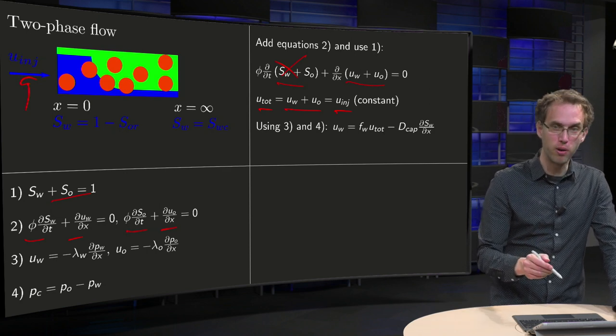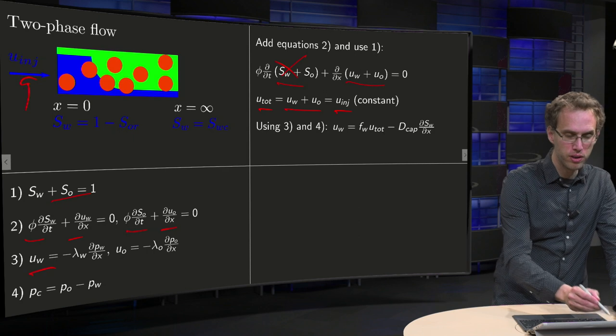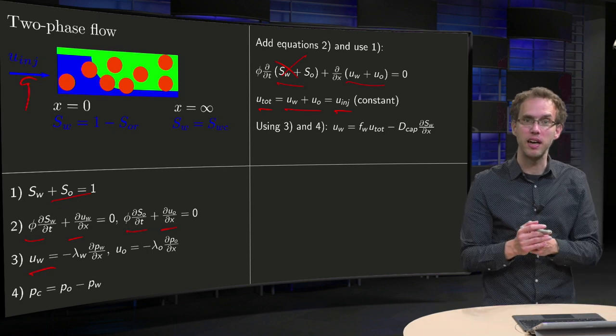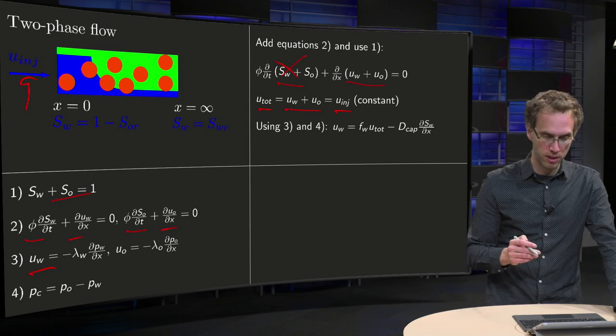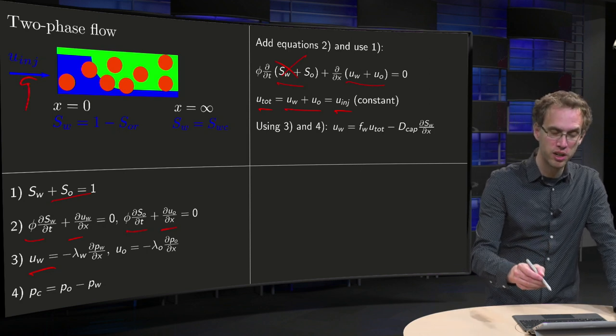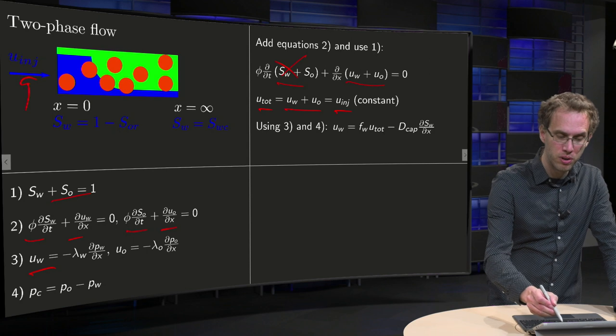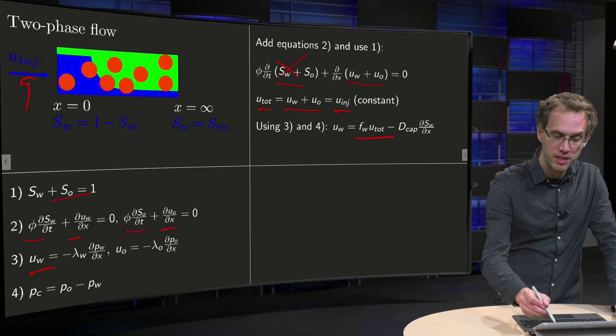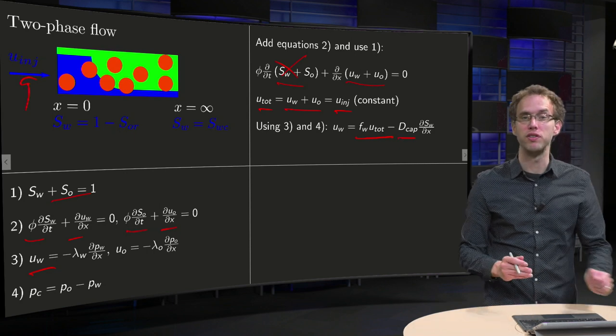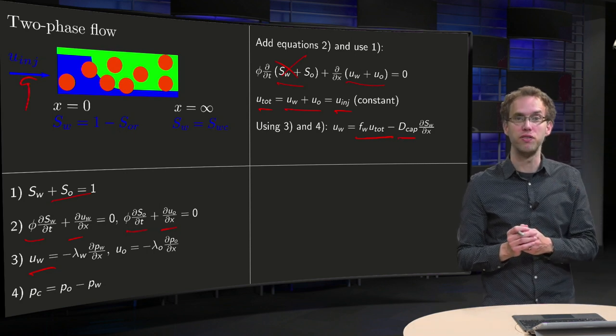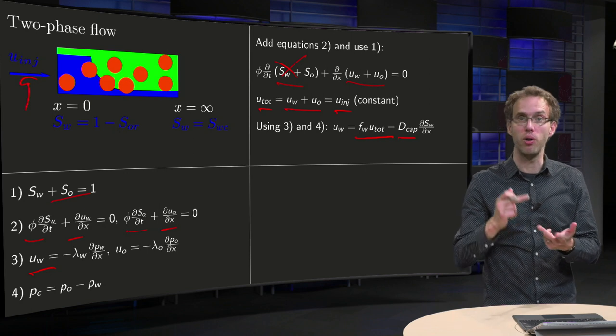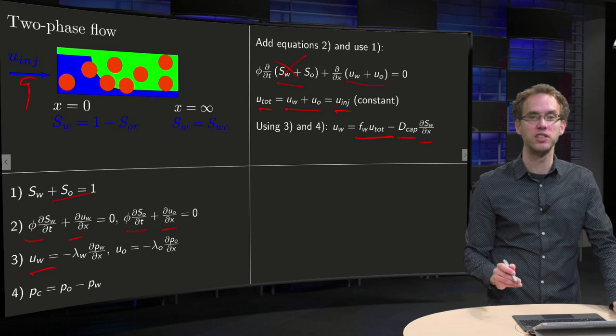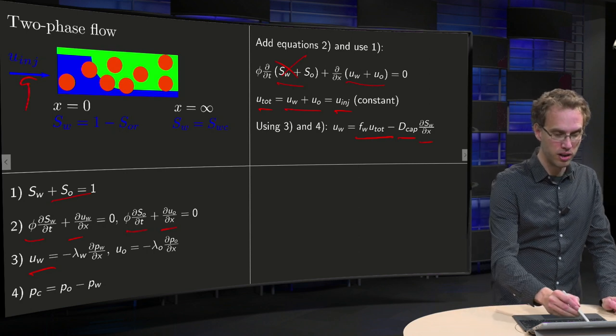Now we use equations 3 and 4. We have u_w, and we have seen before that you can eliminate the pressures and rewrite it in terms of fractional flow: F_w times u_total minus some capillary diffusion coefficient. This capillary diffusion coefficient contains lambda_w, lambda_oil, and dP_c/dS_w, times dS_w/dx.